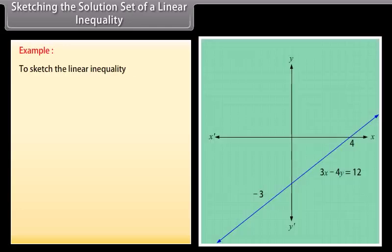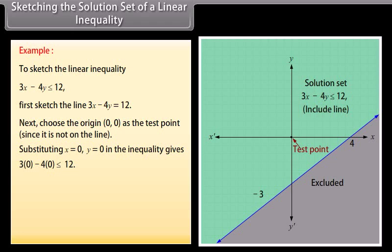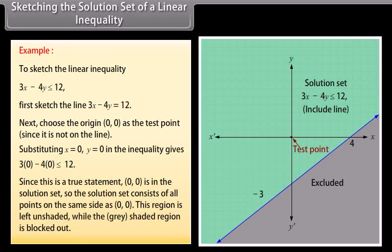Example: to sketch the linear inequality 3X − 4Y ≤ 12, first sketch the line 3X − 4Y = 12. Next, choose the origin (0,0) as the test point since it is not on the line. Substituting X = 0, Y = 0 gives 3(0) − 4(0) = 0 ≤ 12, which is true. So (0,0) is in the solution set. The solution set consists of all points on the same side as (0,0); this region is left unshaded while the grey shaded region is blocked out.